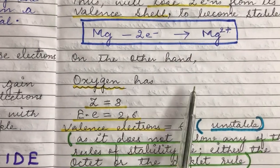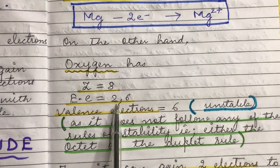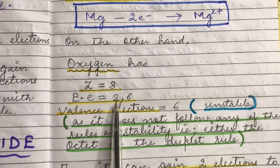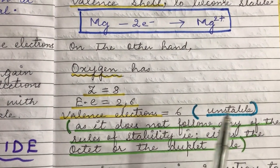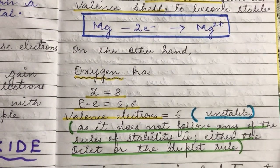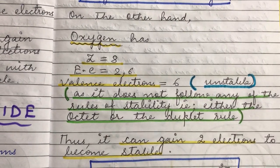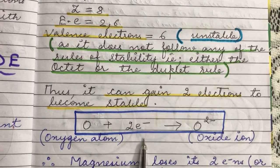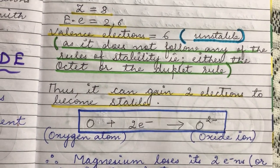On the other hand, the oxygen atom has an atomic number of 8 and its electronic configuration is 2, 6. It has 6 electrons in the outermost shell and is unstable since it does not have 8 electrons in its L shell. It follows neither the octet rule nor the duplet rule. Therefore, in order to attain stability, it can gain two electrons and form a 2-negative ion — that is, the O²⁻ ion, also known as the oxide ion.